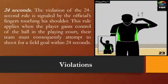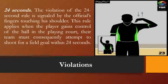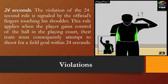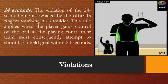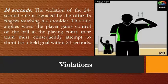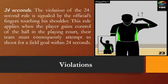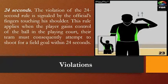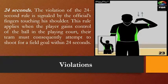Another violation is 24 seconds. The violation of the 24-second rule is signaled by the official touching a finger to the shoulder. This rule applies when the player gains control of the ball — their team must attempt to shoot for a field goal within 24 seconds. The referee stops the clock and touches his shoulder, signaling a 24-seconds violation. A team with possession must execute, shoot, or even hit the ring within 24 seconds.